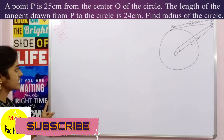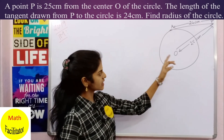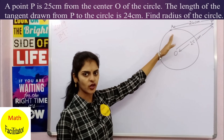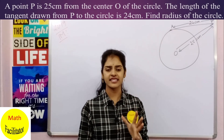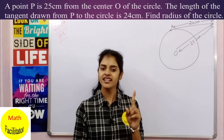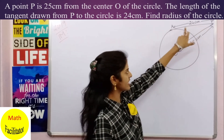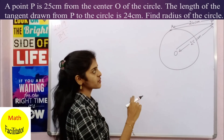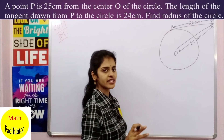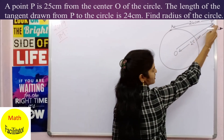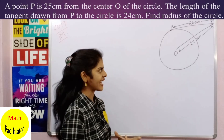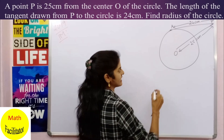This question is from 2019 and it is a one-marker. There is a circle with center O, and P is an external point from which a tangent is drawn to the circle. A tangent is a line which touches a circle at a single point — here it touches at point A. The length AP is called the length of the tangent, which is given as 24 cm, and the distance from center O to point P is 25 cm. A tangent is always perpendicular to the radius.